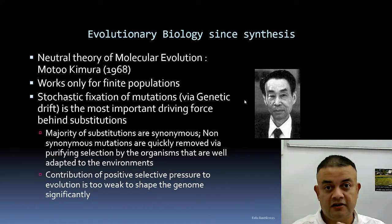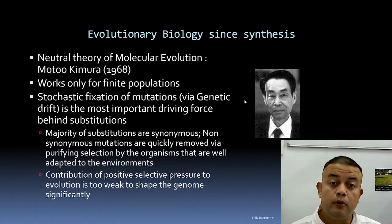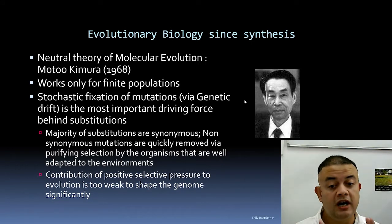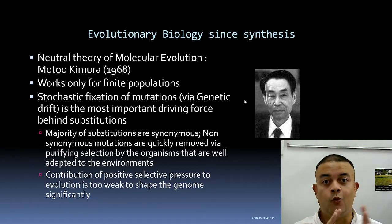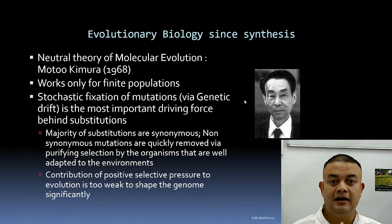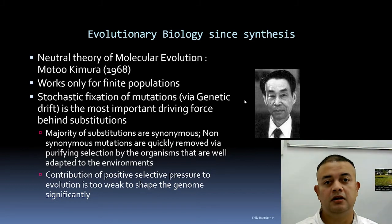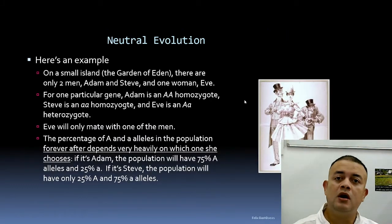Deleterious mutations are quickly removed from the population because that lineage stops — vertical transmission doesn't happen. For example, Down syndrome patients are mostly sterile, so the population gets rid of such deleterious mutations. The contribution of positive selective pressure to evolution is too weak to shape the genome significantly, leading to something called a random walk — the population shifts left and right like a drunkard walking out of a bar.